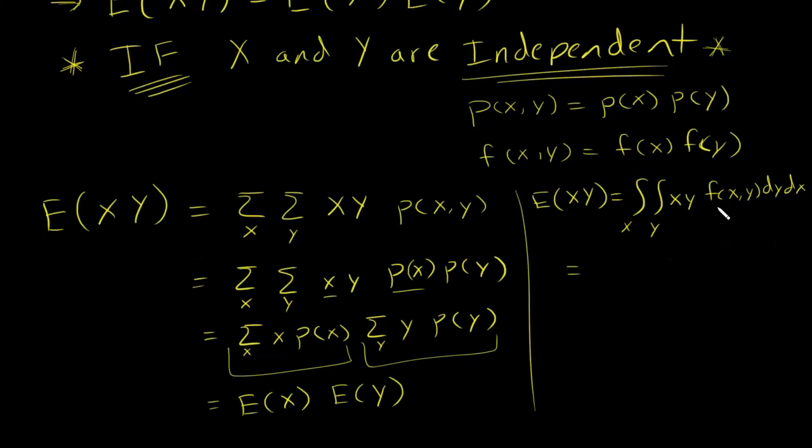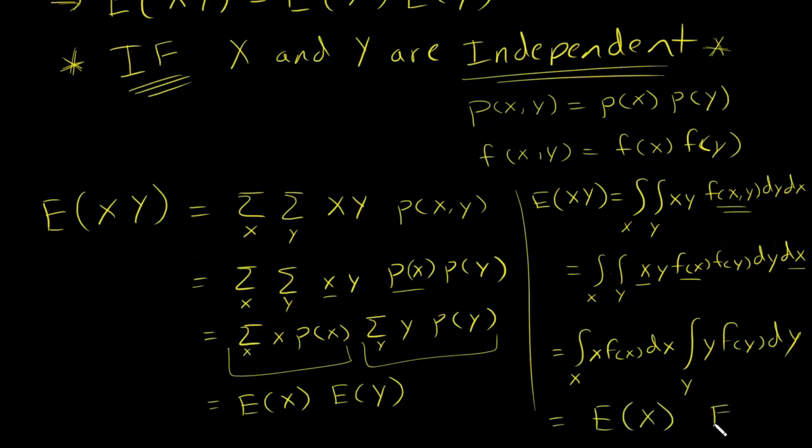And then I can rewrite this as the product of the marginals, f of X times f of Y. And then I can pull out my X and basically pull it out of the integral of Y since it doesn't have anything to do with Y. And I get X f of X dx, and then Y integrate over Y, f of Y dy, which is exactly what the expected value of X is and times the expected value of Y.